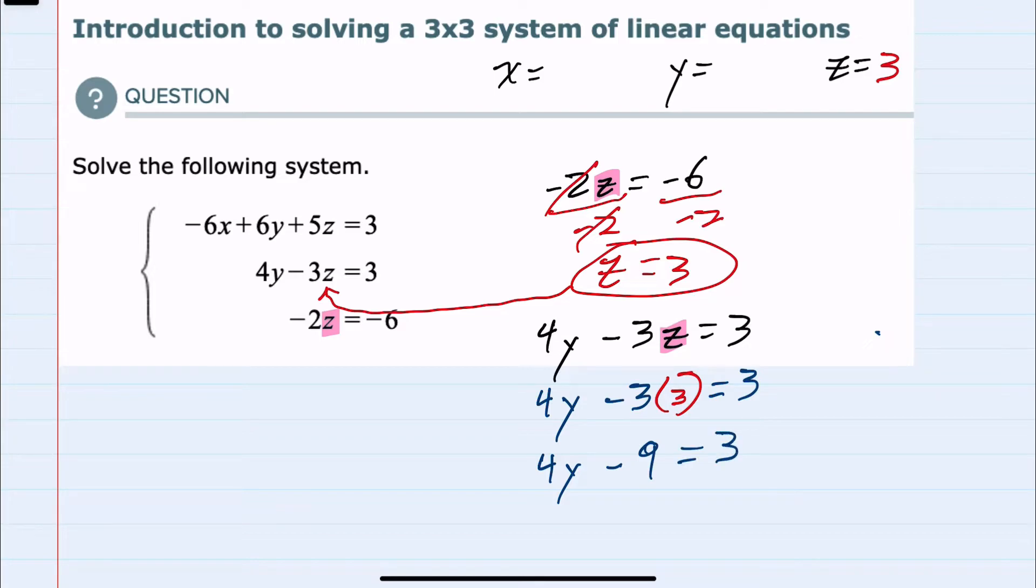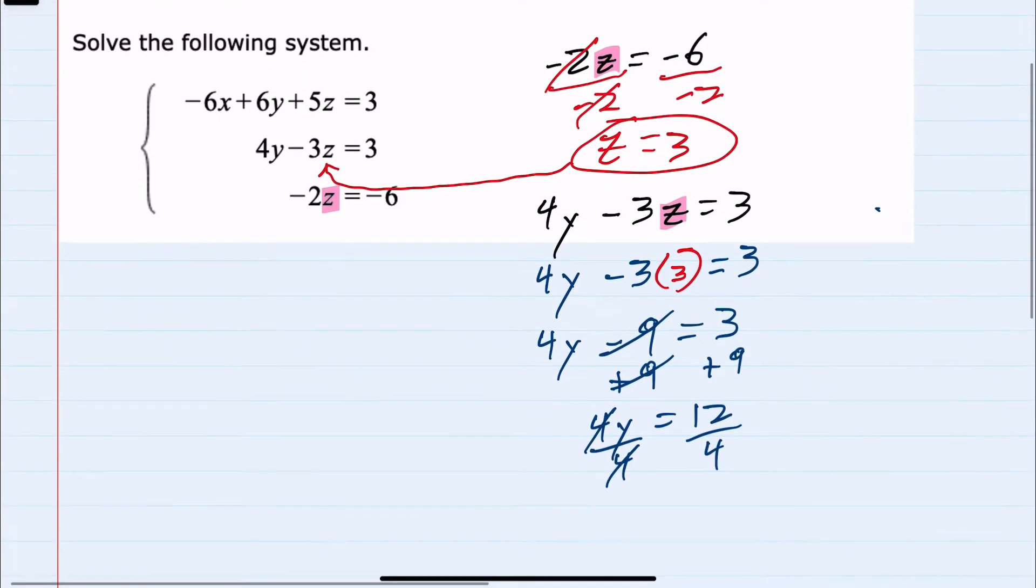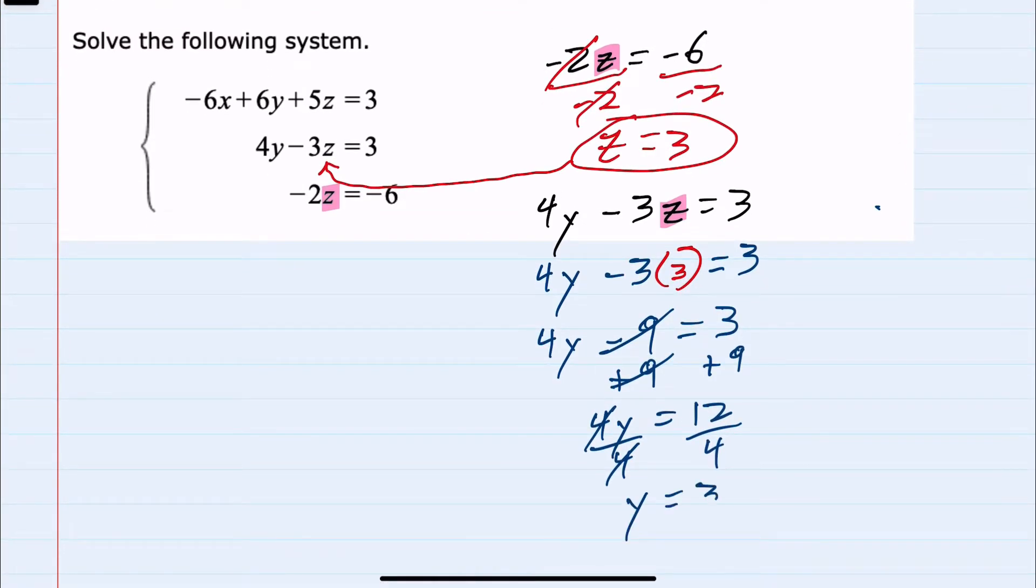Solving for y, I would add the 9 over to the right-hand side. To isolate our y term, we now have 4y equals 12. Dividing by 4 on both sides gives me y equals 3.